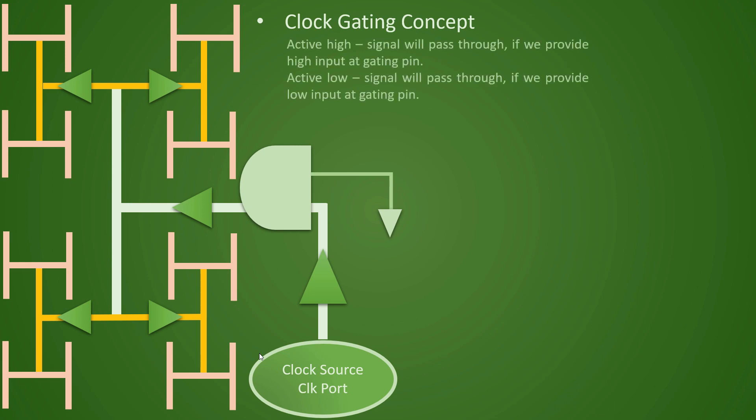And hence, the conclusion is, if you have active high signal, that is this AND gate, so signal will pass through only if you have high input at the gating pin.